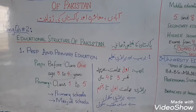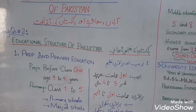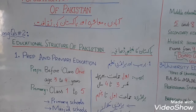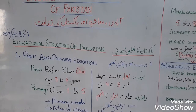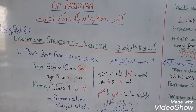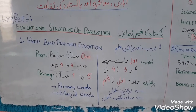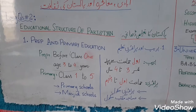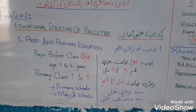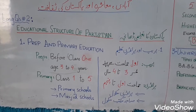Prep and Primary Education: The education before Class 1 is called Prep, and mostly children aged between 3 to 4 years are included. From Class 1 to Class 5 is called Primary Education, which is imparted in Primary Schools and Masjid Schools.